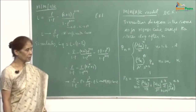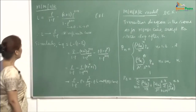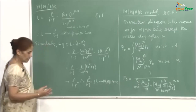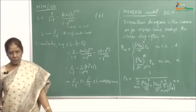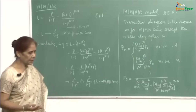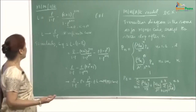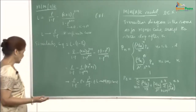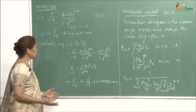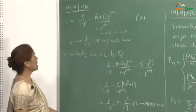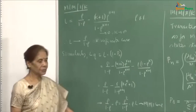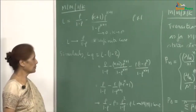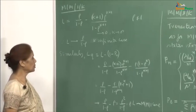In the last lecture, we talked about the MM1 case and I will just continue with that. The basic thing to be noted is the difference between MM1 case and MM1K case is only the queue size. We are restricting the number of people in the system. For MM1K, the number of states only go up to k. For MM1, the states could go up to infinity.